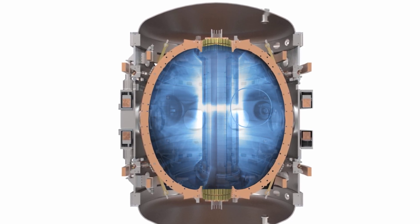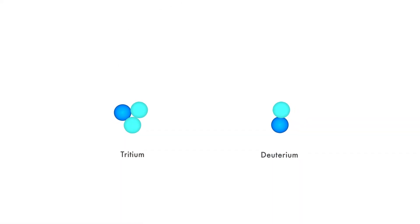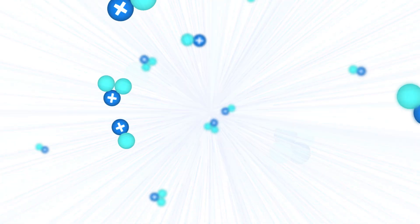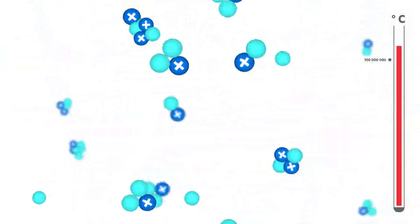The fusion fuels deuterium and tritium will then fuse and release enormous amounts of energy. This only happens at high temperatures of hundreds of millions of degrees Celsius.